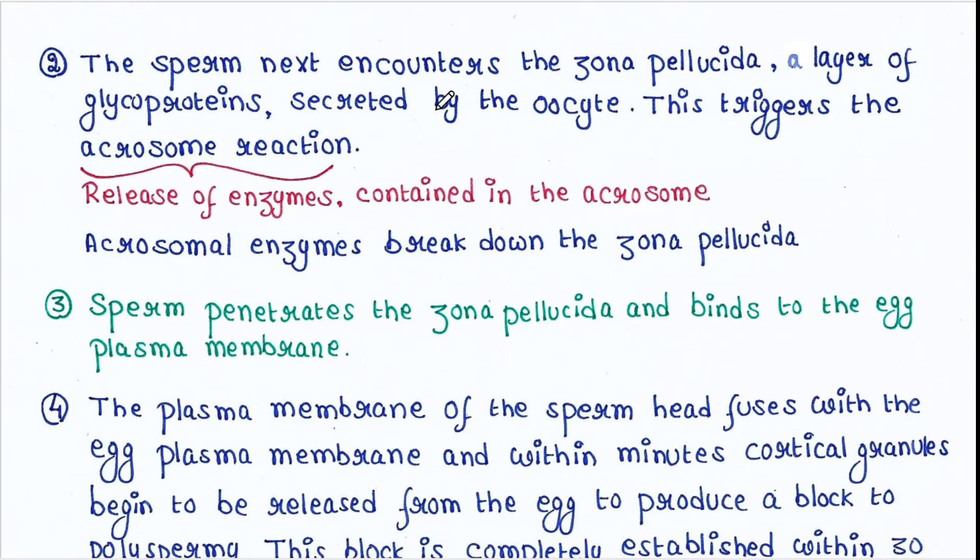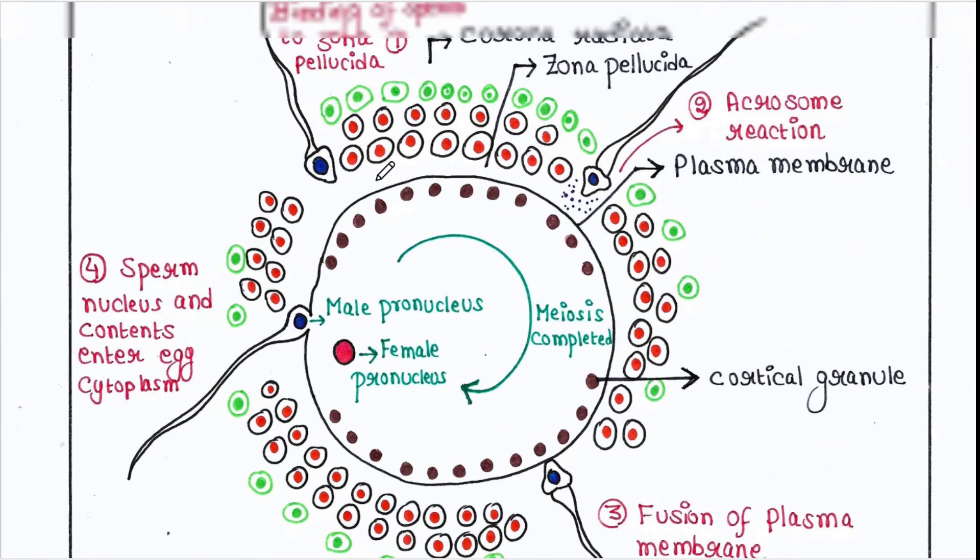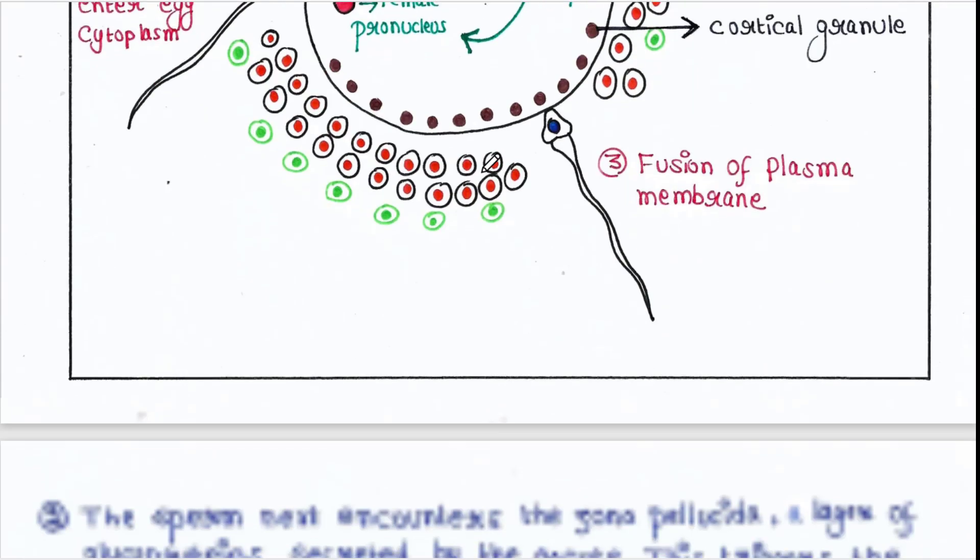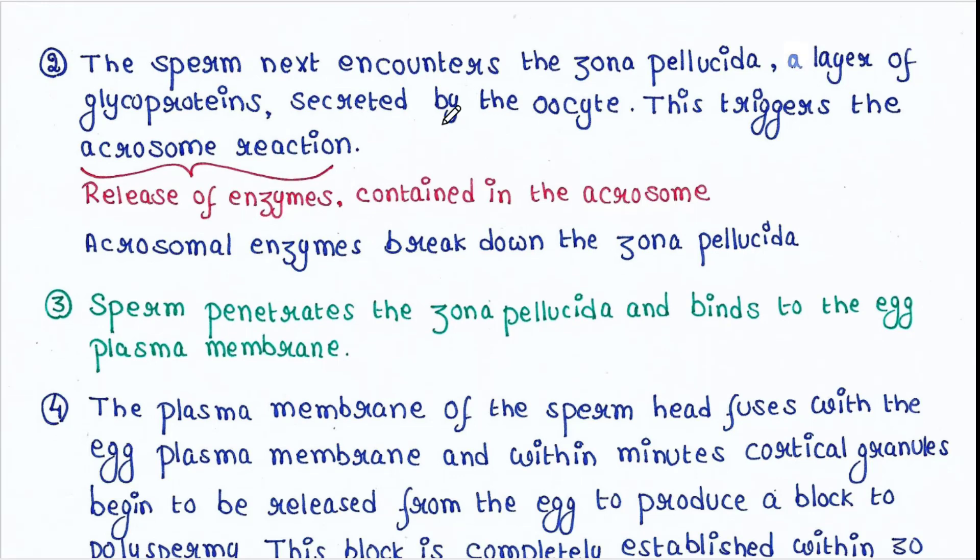The sperm next encounters the zona pellucida, a layer of glycoproteins secreted by the oocyte. This zona pellucida triggers the acrosome reaction of sperm. Acrosome reaction means sperm releases certain enzymes which are contained in the sperm acrosome. These acrosomal enzymes break down the zona pellucida.